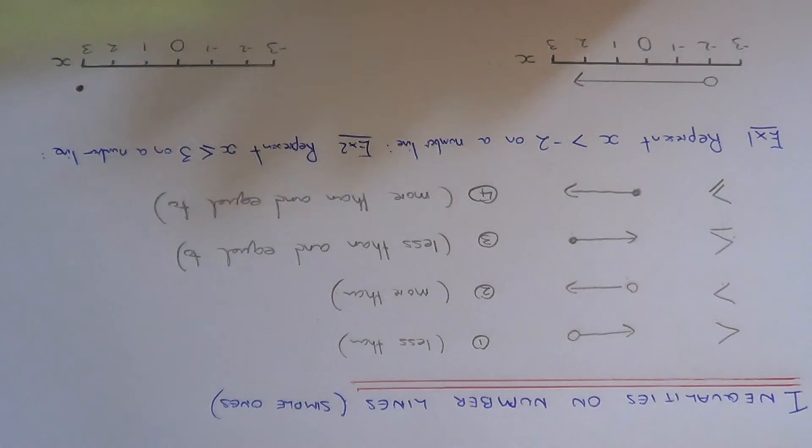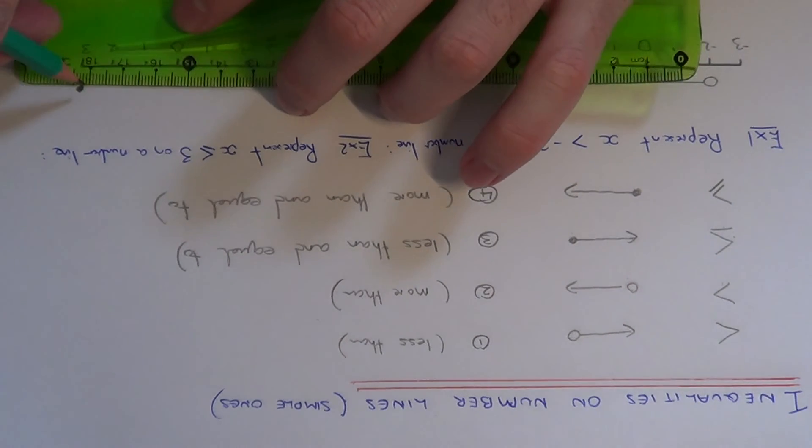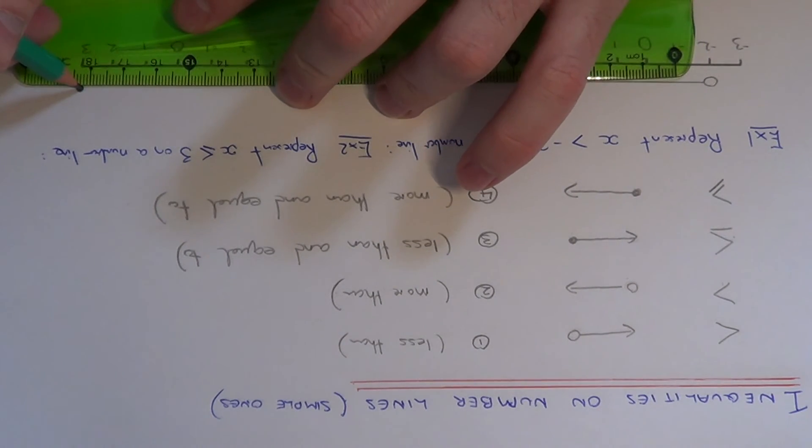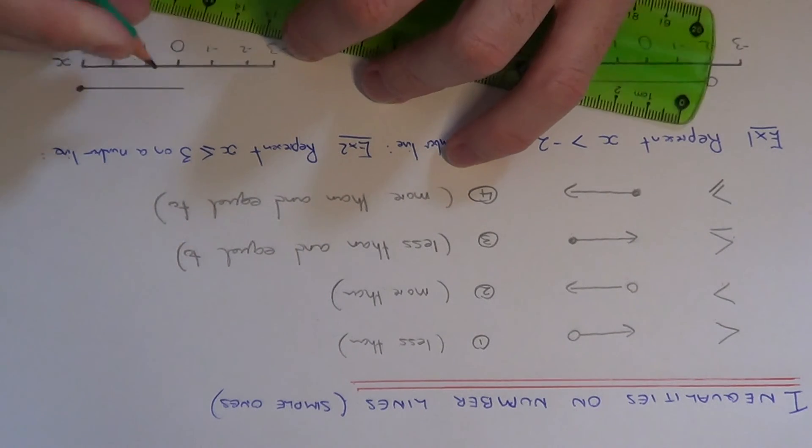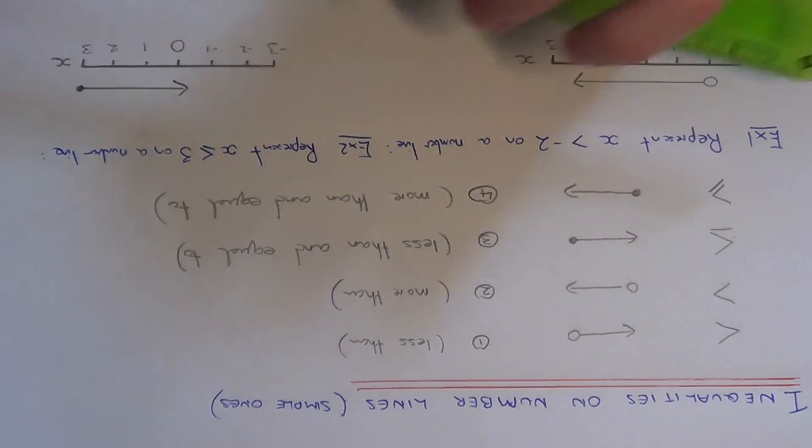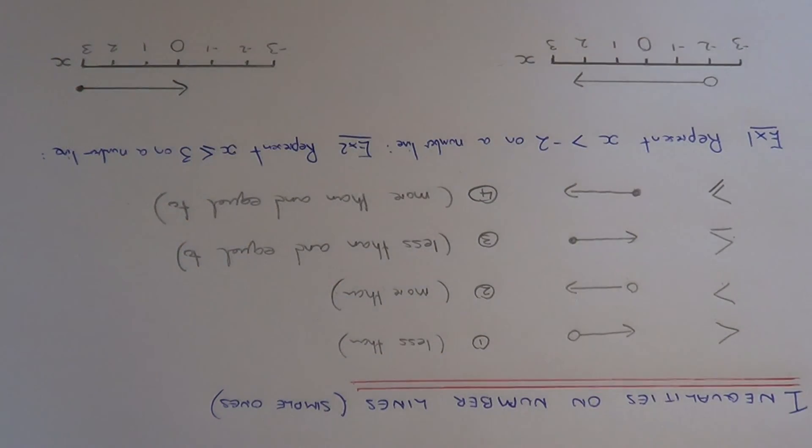And we do an arrow to the left because we need the numbers which are smaller and equal to three. And that's all you need to do. Thanks for watching.